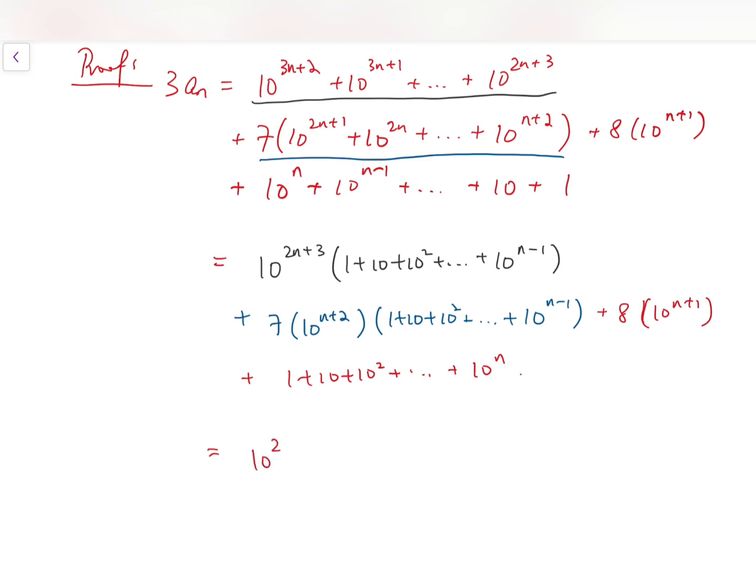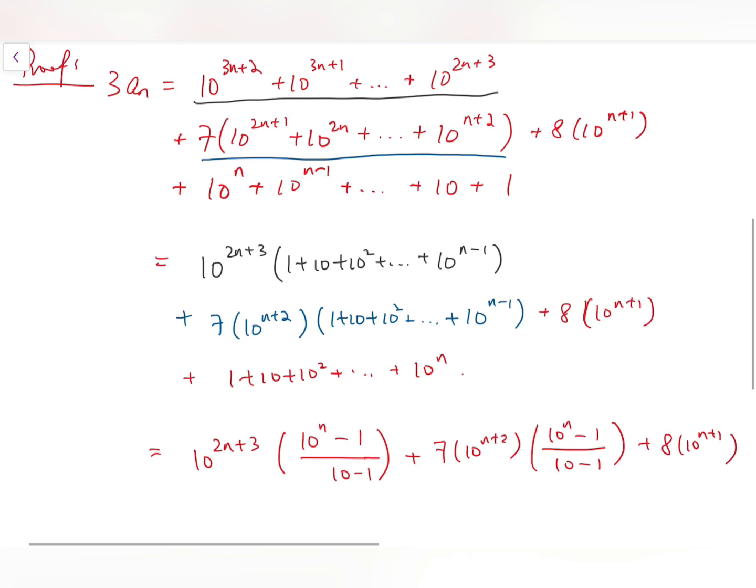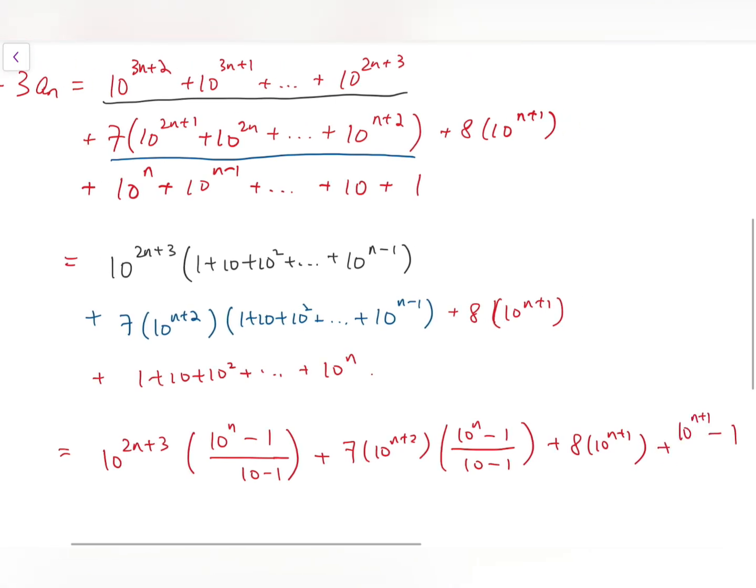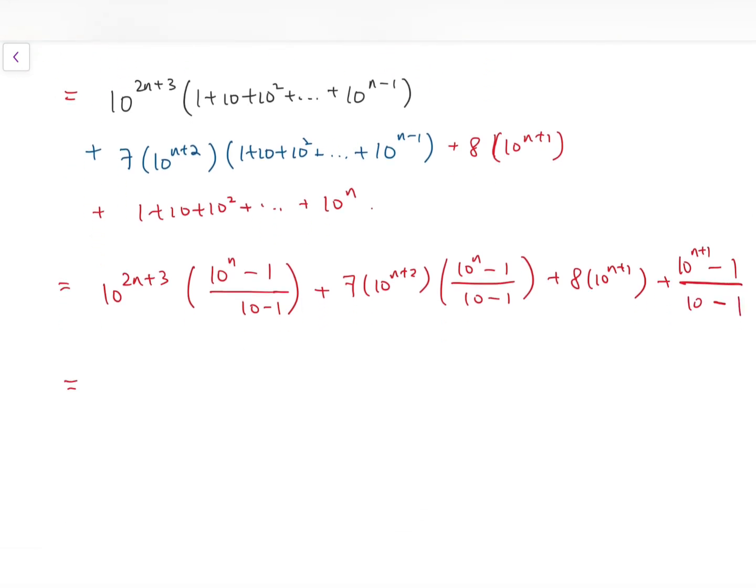To proceed, the first black block is 10 to the power 2n plus 3, times 10 to the power n minus 1 over 10 minus 1. And then similar for the next block, the blue block is 7 times 10 to the power n plus 2 times 10 to the power n minus 1 over 10 minus 1, plus 8 times 10 to the power n plus 1. And finally, 10 to the power n plus 1 minus 1 over 10 minus 1. So now we have lots of fractions with 9 as the denominator. We take it out, and we do this by multiplying the 10 to the power 2n plus 3 into 10 to the power n minus 1, to reduce the number of brackets.